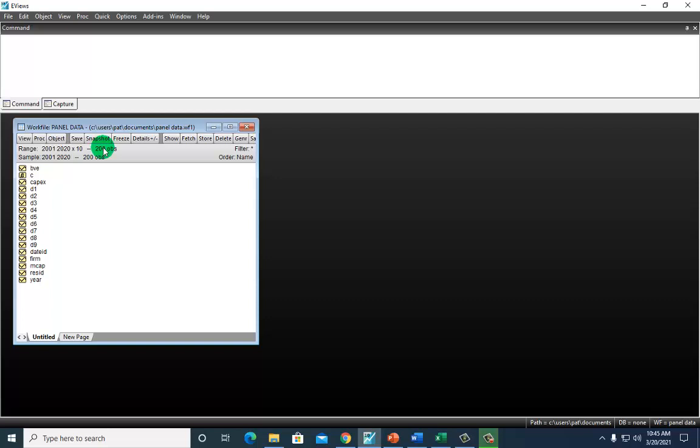So to run this regression, what we're going to do is to first click on the dependent variable, market capitalization, hold down the control key, and then click the regressors in the order that you want them to appear. I want the dummies first. So I'm going to click D1, 2, 3, 4, 5, 6, 7, 8, 9. And then click on capital expenditure and book value of equity. And we're good to go.